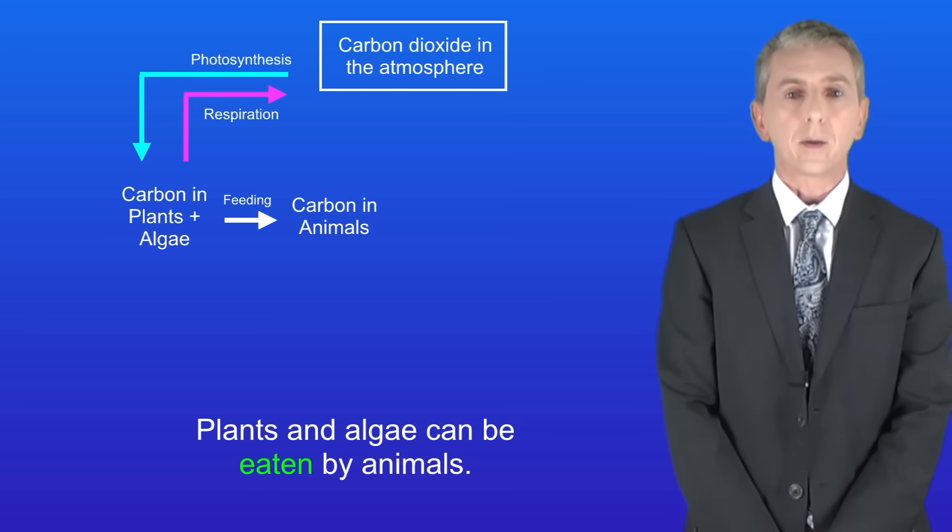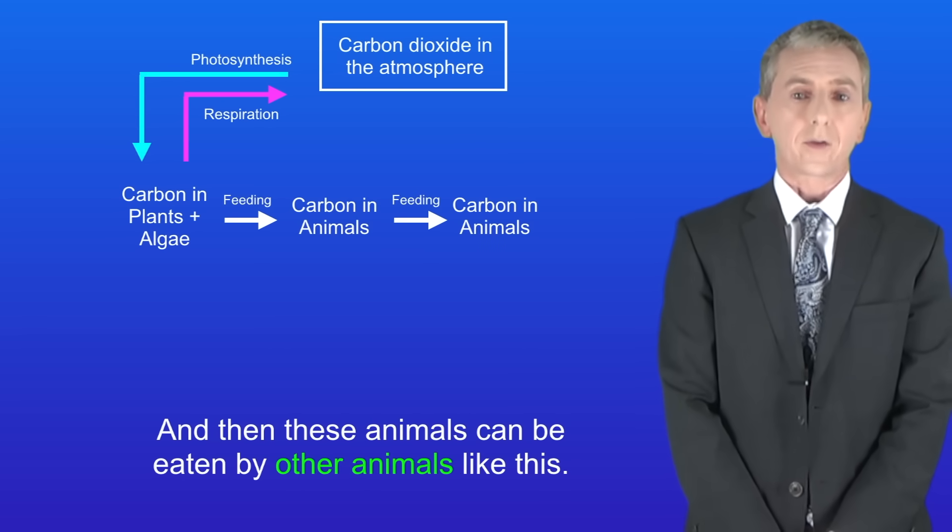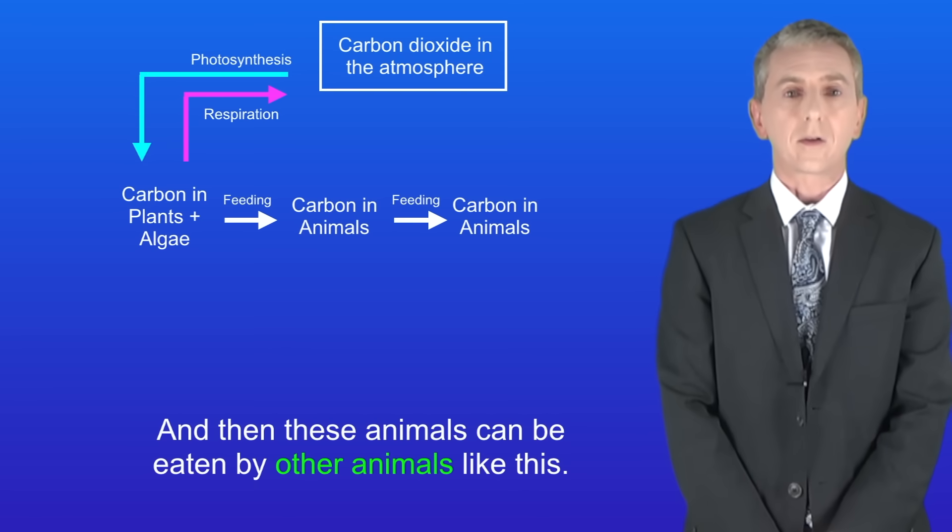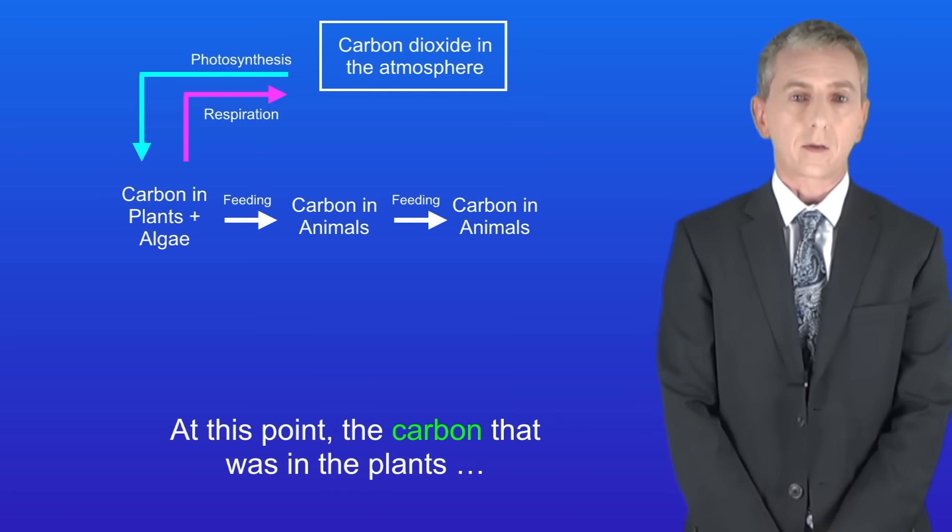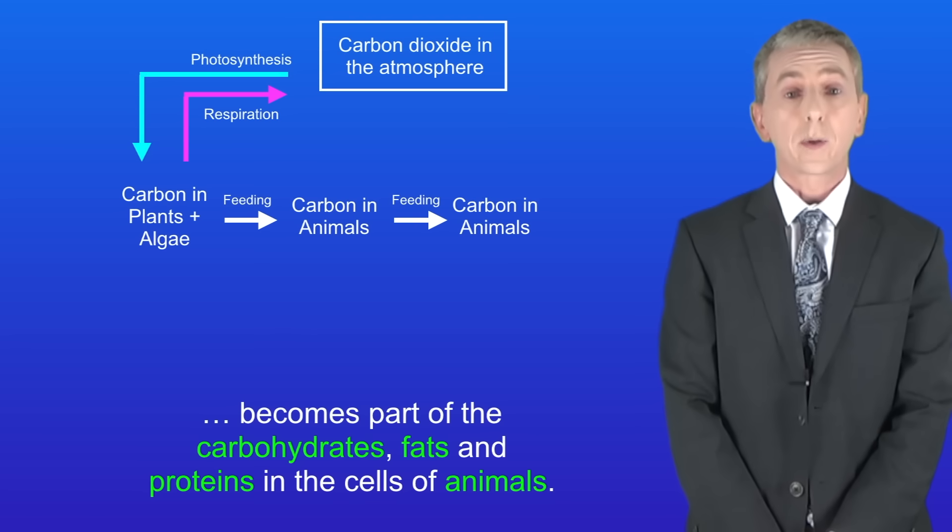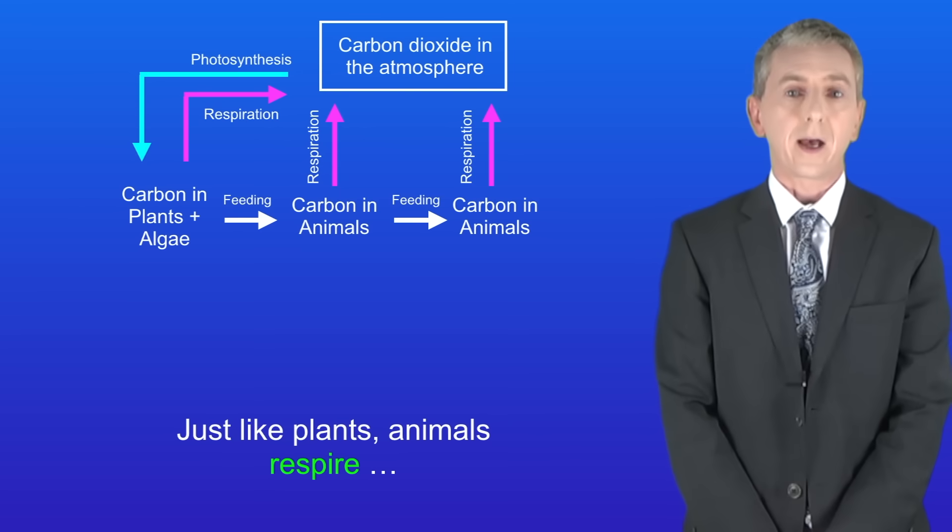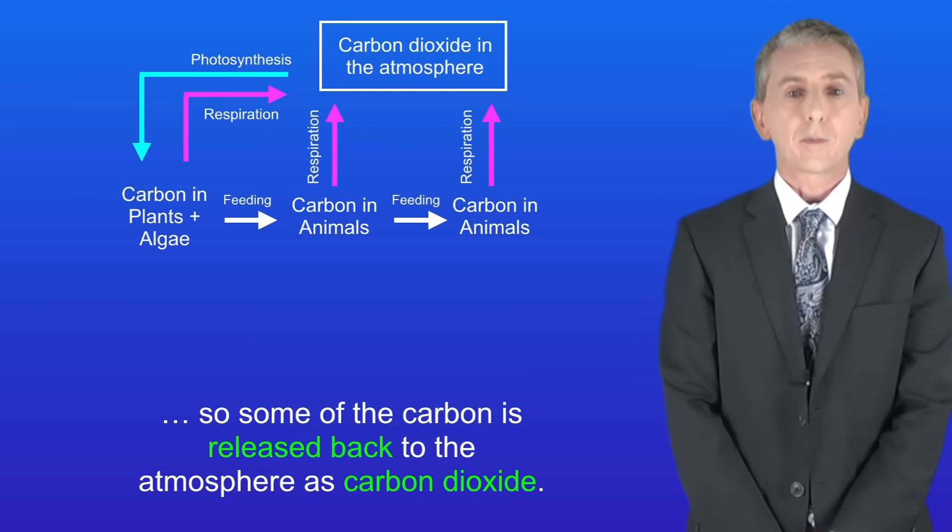Plants and algae can be eaten by animals and then these animals can be eaten by other animals like this. At this point the carbon that was in the plants becomes part of the carbohydrates, fats and proteins in the cells of animals. Just like plants, animals respire so some of the carbon is released back to the atmosphere as carbon dioxide.